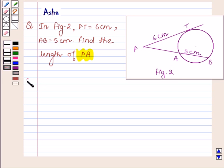Let's start with the solution. So here we are given that the length of the tangent from the point P to the circle is 6 cm. And also we are given that AB is equal to 5 cm.